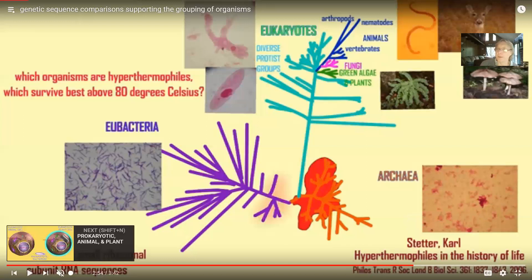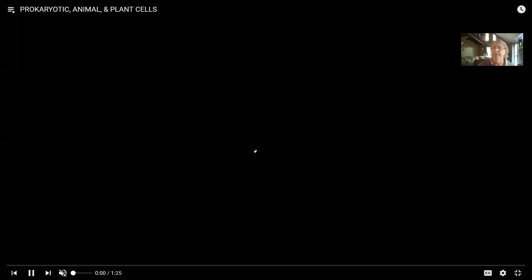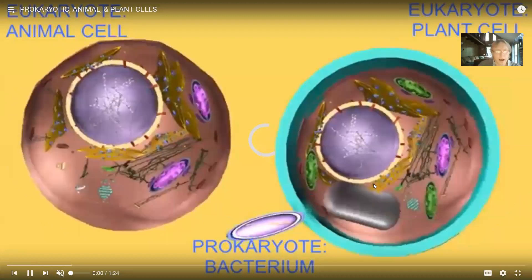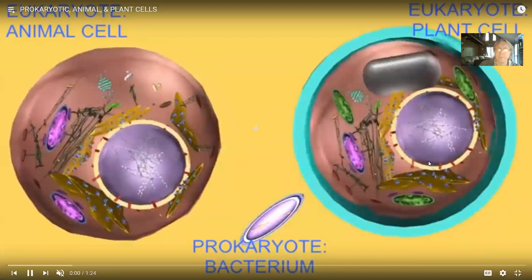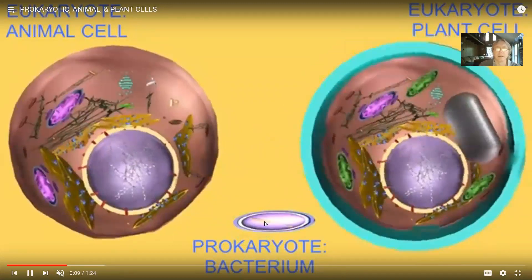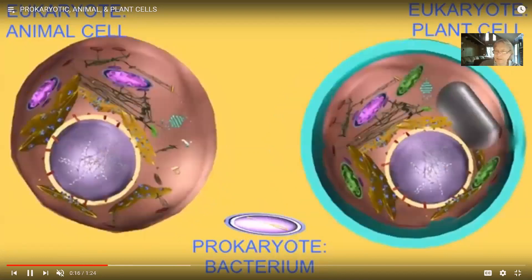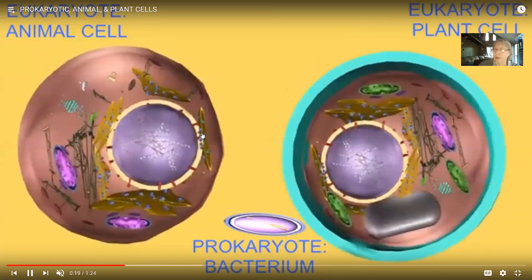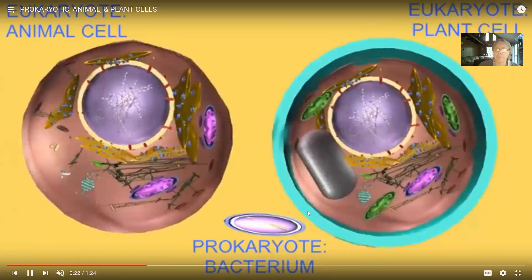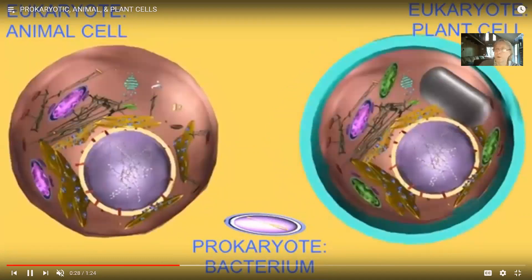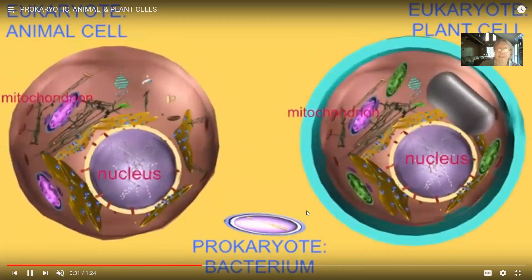Bacteria are made of cells - all living things are, and we consider that to be the foundation of life on Earth. But there are two kinds of cells on Earth. The kind we may be most familiar with are the big complex cells that have a nucleus, membrane-bound organelles like mitochondria and rough endoplasmic reticulum. Plant cells, fungi, amoeba, and paramecia are all composed of eukaryotic cells. But there is a second type called the prokaryotic cell, which lacks the nucleus, lacks the mitochondria, and lacks these membrane-bound organelles - generally smaller and simpler.